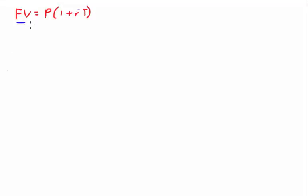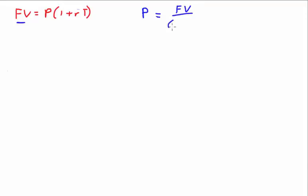In circumstances where they ask you for principal instead, you need to get P on its own. You divide both sides by (1 + RT), and the (1 + RT) on the right side cancels, leaving you with: P = FV ÷ (1 + RT).